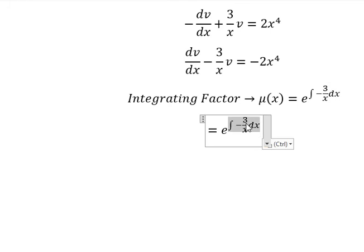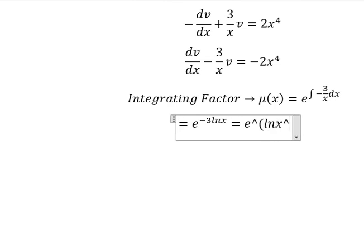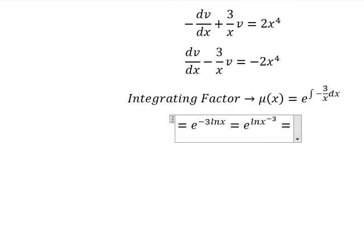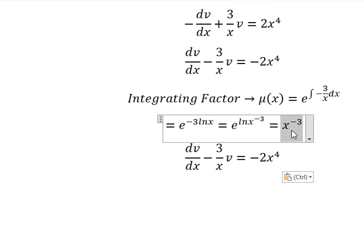So this gives us negative 3 times ln(x). The negative 3 goes inside the natural log, and we get x to the power of negative 3. So we have μ equals x to the power of negative 3, which means we multiply both sides by x to the power of negative 3.